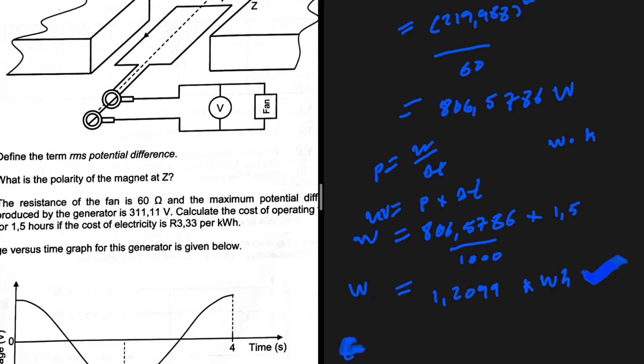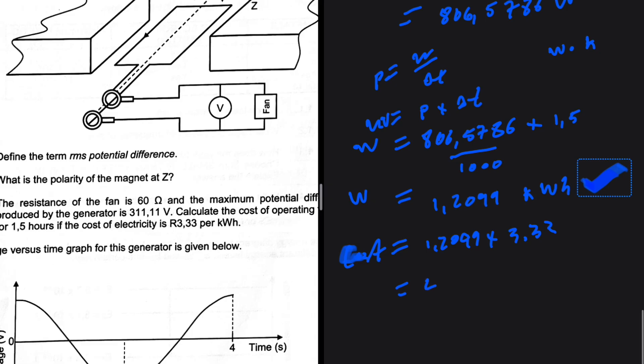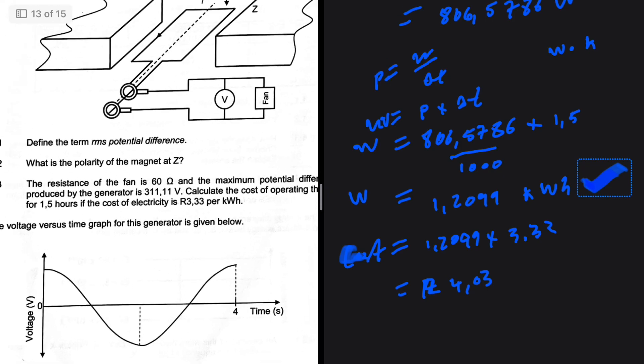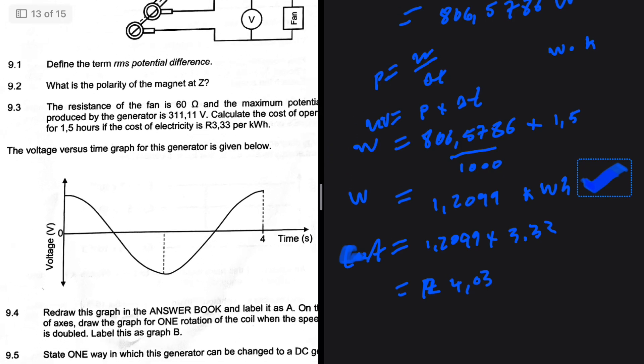After we deduce that, the cost is going to be equal to 1.2099 multiplied by 3.33. When I put that in my calculator, I'm getting R4.03. So that is the cost for question 9.3.